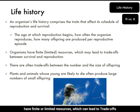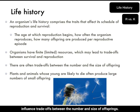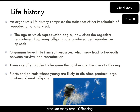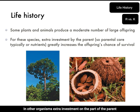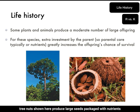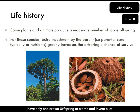Organisms have finite resources, which can lead to tradeoffs between survival and reproduction. Selective pressures also influence tradeoffs between the number and size of offspring. Plants and animals whose young are more likely to die often produce many small offspring — for example, the dandelion produces many small seeds, few of which may reach suitable habitat. In other organisms, extra investment by the parent greatly increases offspring survival, such as Brazilian tree nuts which produce large seeds packaged with nutrients. Primates generally have only one or two offspring and invest a lot of time caring for them.